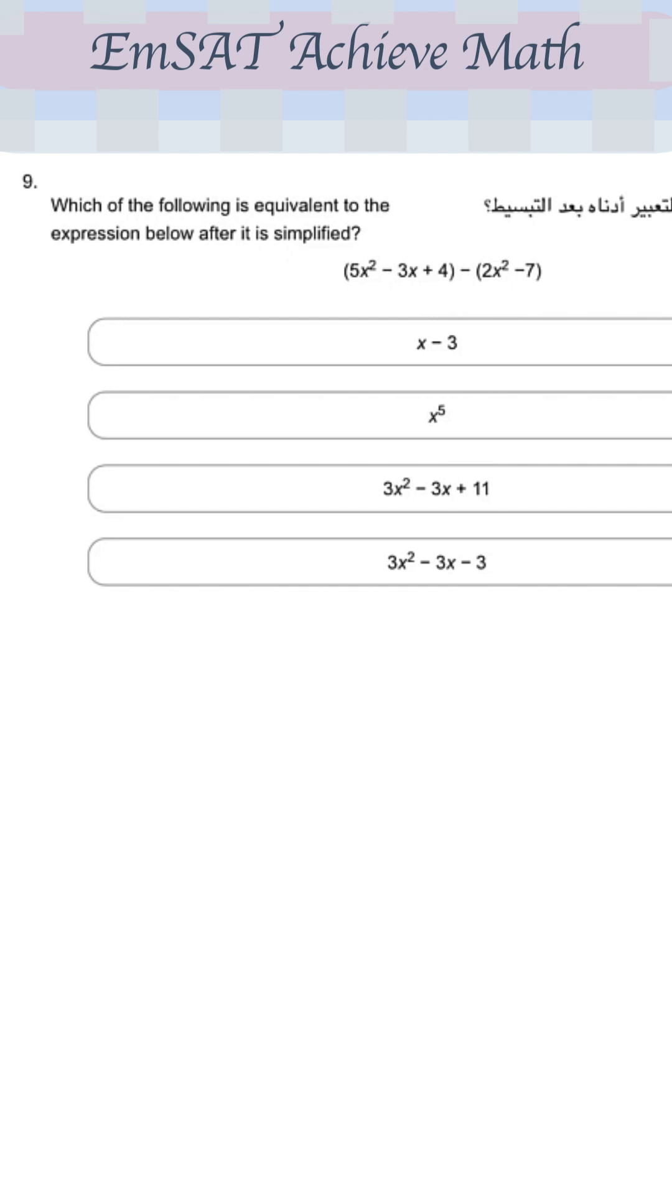Which of the following is equivalent to the expression below after it is simplified. Let us start by removing the brackets. So here we have 5X squared minus 3X plus 4. We leave it minus into 2X squared minus 7.